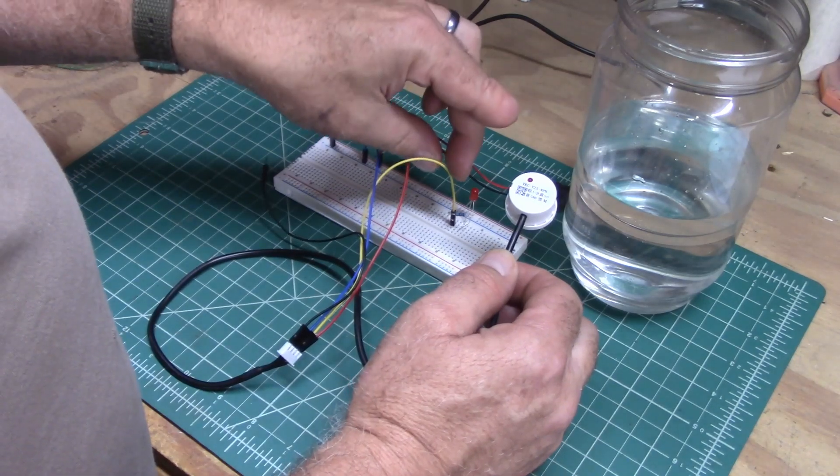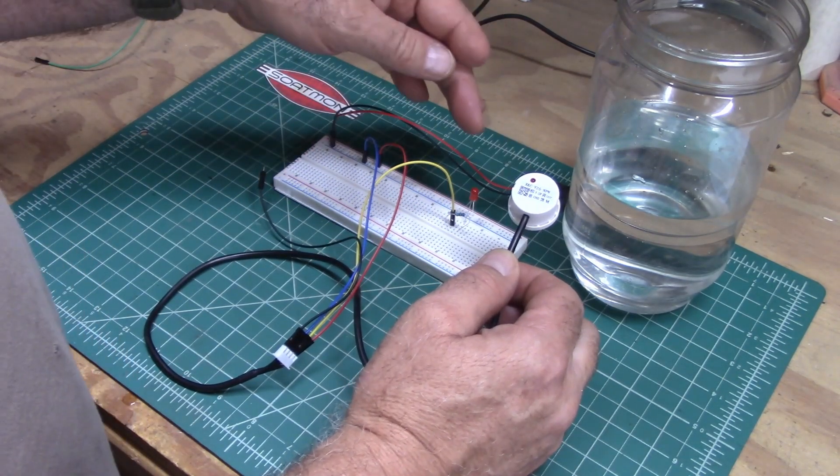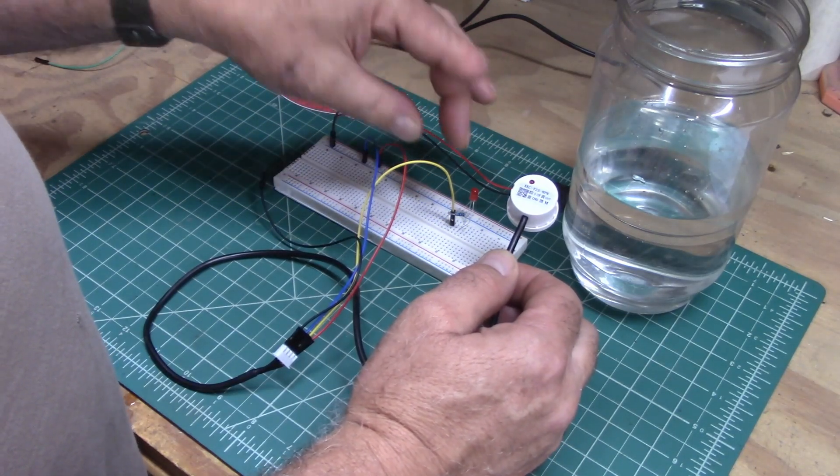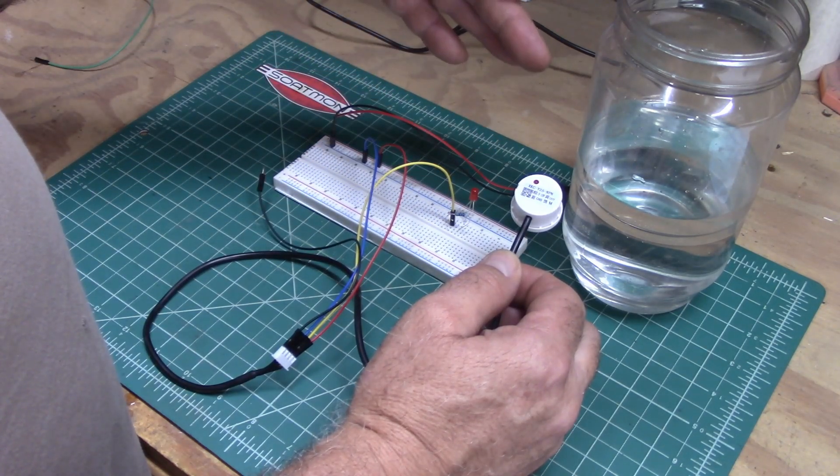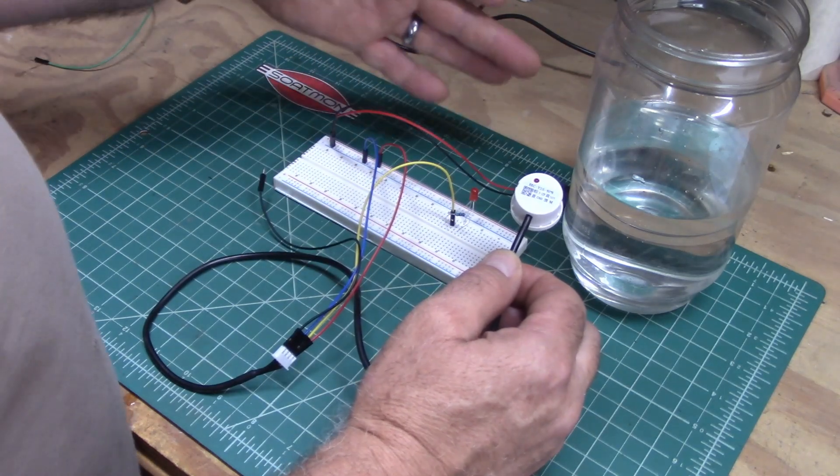So this will put out 12 volts negative, so you'd have to have this go to the coil of a relay that doesn't use more than 100 milliamps for the coil to the negative side, and then the positive side of the relay to the 12 volts positive. Then it would activate that relay, and the relay would be able to switch something large like a pump.